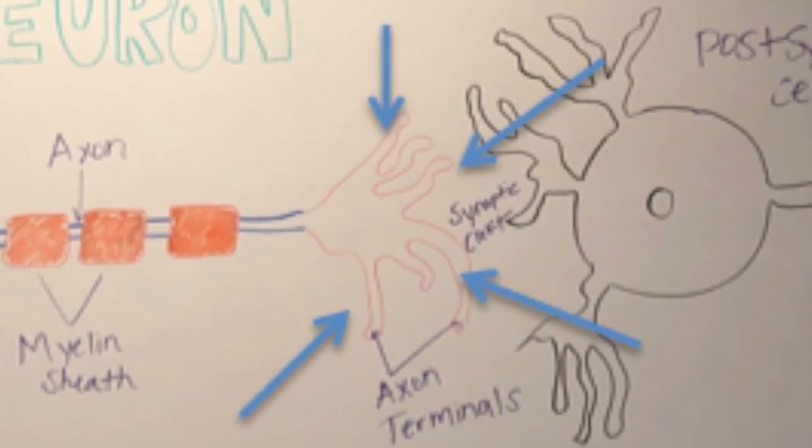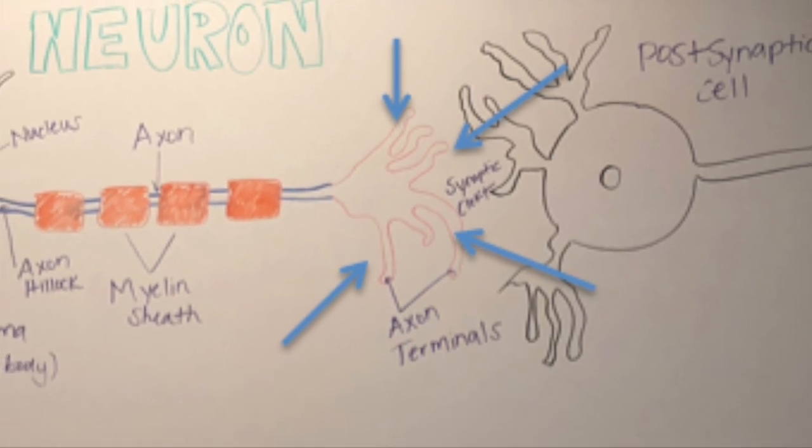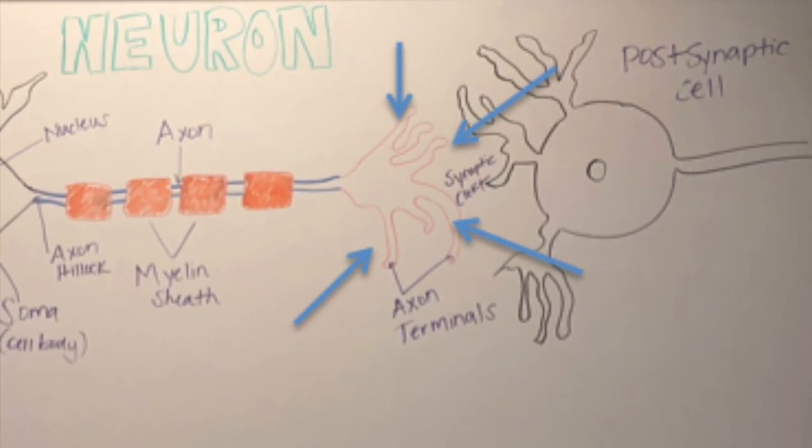At the end of a neuron, we have the axon terminal, which is where the neural impulse ends and the neurotransmitters are packaged and released.